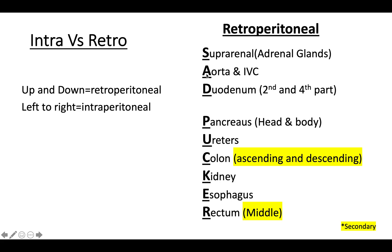SAD PUCKER stands for: Suprarenal or adrenal glands, Aorta and IVC, Duodenum — most importantly your second and fourth parts, Pancreas — specifically the head and body tucked into the duodenum, not the neck and tail (the tail is intraperitoneal), Ureters coming from your kidneys, Colon ascending and descending, Kidneys, Esophagus coming out from T10, and Rectum — the middle aspect will also be retroperitoneal.